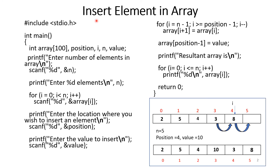The insert program inserts a new element at a particular position in an array. For example, if the size n is 5, the array indices run from 0 to 4. Position is 4, meaning the 4th position corresponds to index 3. The value to insert is 10, so we want to insert 10 at the 4th position.